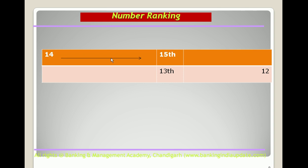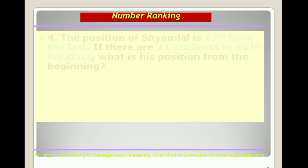Looking at the chart: 15th from one side means 14 people are before Rajan, and 13th from the other end means 12 people are behind him. Total = 14 + 1 + 12 = 27. Alternatively, using the shortcut: 15 + 13 − 1 = 27 people.